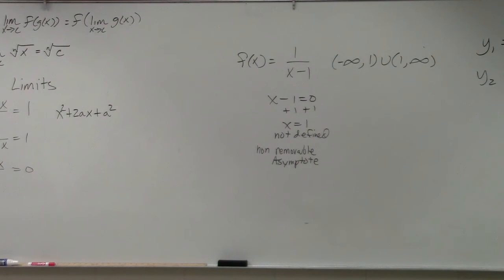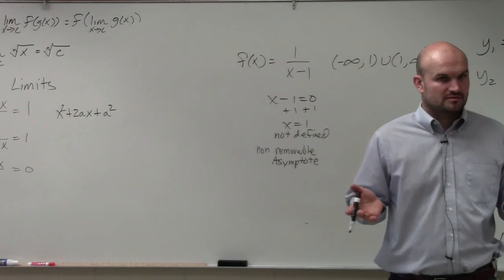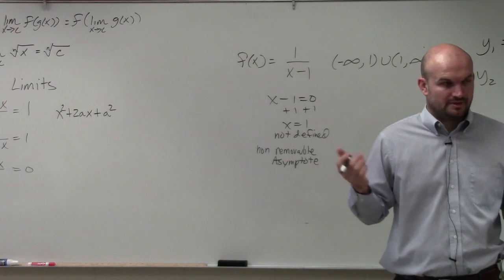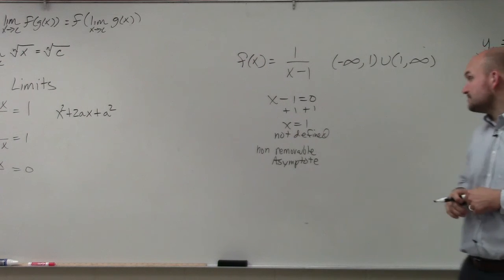But now, do you guys see the difference between the hole and the asymptote? Would you write down the homework? OK. And the slide will be up there as well for you to look at for horizontal asymptotes.